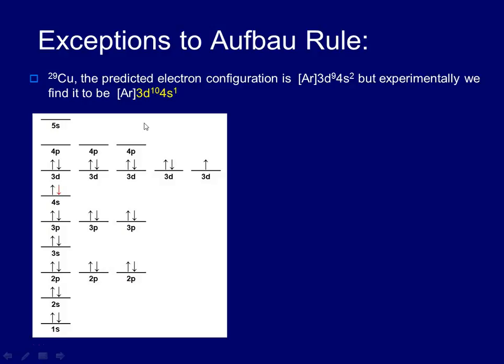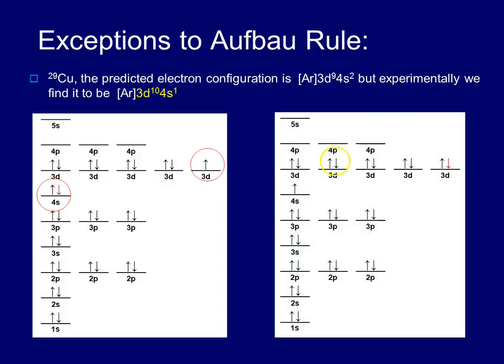So again, showing you my diagram, instead of having the two electrons with a full 4s and one of the D sublevels having only one electron, what actually is found experimentally is that one of those S electrons ends up hanging out in a D orbital.